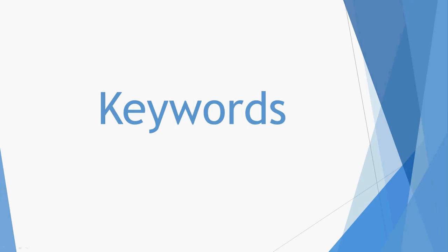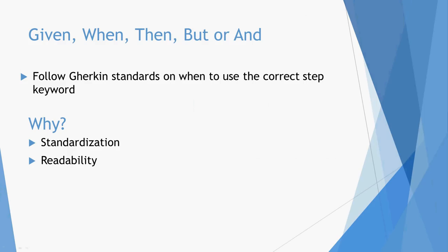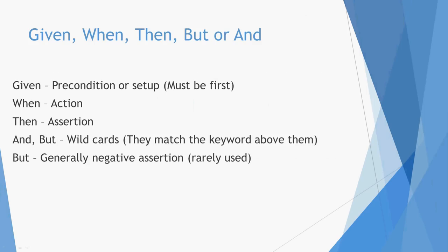To start off, we're going to talk about keywords — meaning the Given, When, Then, But, Or, and And keywords. You want to follow Cucumber standards on which keyword to use. Given should always be a precondition and has to be first — even if it's in the background — it's meant to be the setup step or to lay out any preconditions. When should always be your action, and Then should be your assertion.